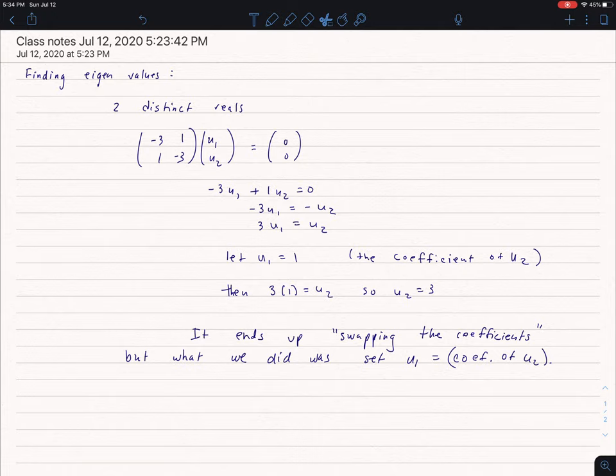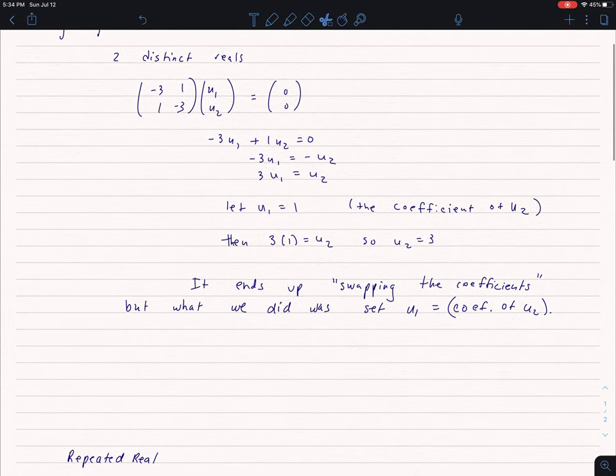So what ends up happening is the coefficients of the u1 and the u2 get swapped. So it sort of looks like no matter what we have to do is just swap the coefficients. So it would look something like this.